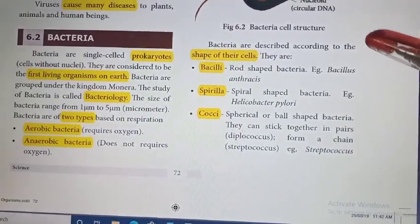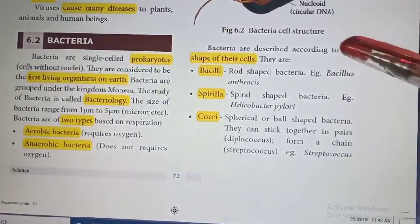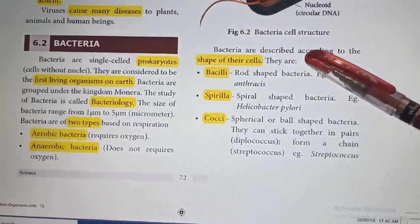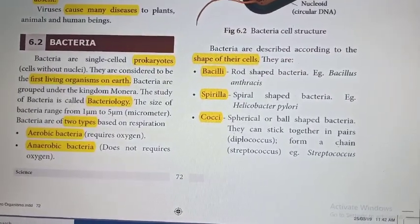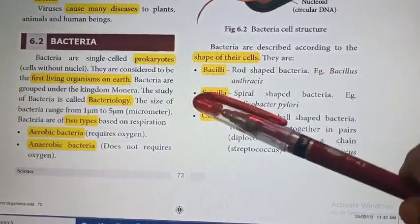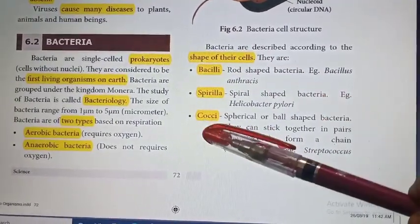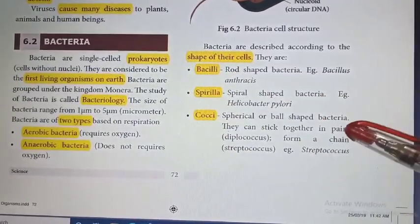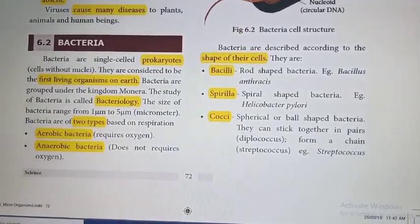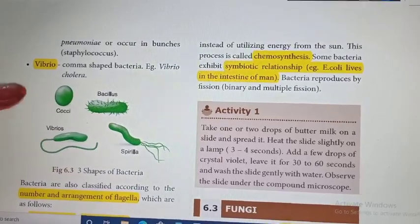Bacteria are classified into four types according to their shape: Bacilli — rod shaped bacteria; Spirula — spiral shaped bacteria; Cocci — spherical or round shaped bacteria; and Vibrio — comma shaped bacteria.